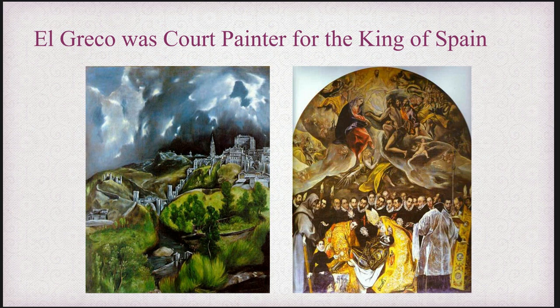El Greco was a court painter for the King of Spain, and here are some of the things that he put together. On the left, you can see we're looking at perspective because we have a lot of scenery and background. On the right, we see where he's likely going to be commissioned by some sort of religious leader. When we talk about the King of Spain in this particular instance, the kings and queens of Spain were very religious — they often tried to expel people who were not Christians, which could be the reason why that painting is focused on religion.